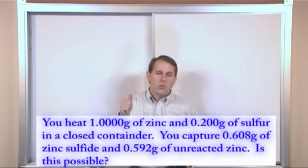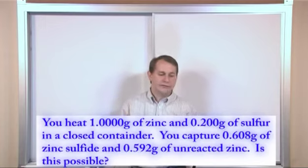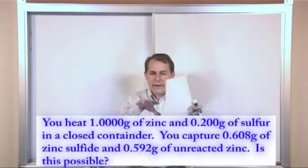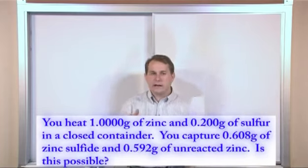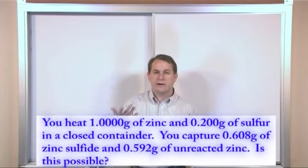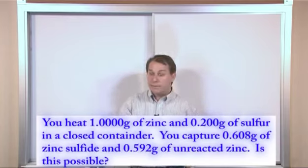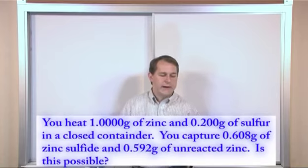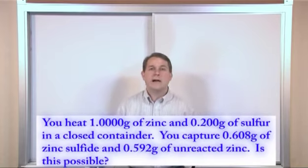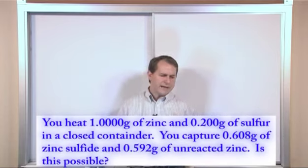So let's read it one more time. We have one gram of zinc and we heat it with 0.2 grams of sulfur in a closed container. So we have a closed vessel. Nothing can get in, nothing can get out. We heat the zinc and the sulfur in the container. We let the reaction proceed. So there's some kind of chemical reaction, zinc and sulfur coming together. After it's done, we open the container up and we look and we see that we have 0.608 grams of zinc sulfide. And zinc sulfide is a chemical compound when we join zinc and sulfur together.